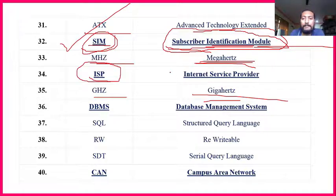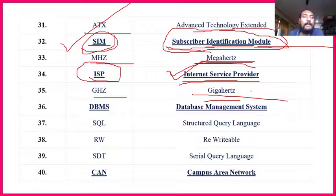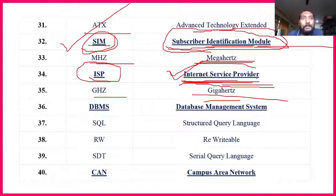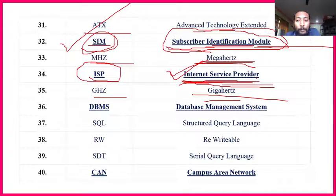MH (Megahertz) and GHz (Gigahertz) are not important at all. ISP — Internet Service Provider — is very important. Through ISP we get connected to the internet. For example, Jio, Airtel, or BSNL — whoever is giving you internet — that is the Internet Service Provider. You may have a BSNL SIM but if you are using Jio data, then Jio is your internet provider, not BSNL.